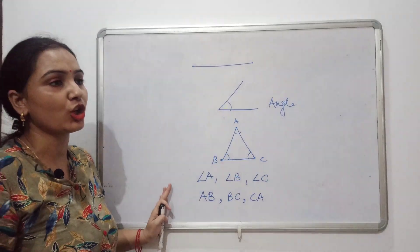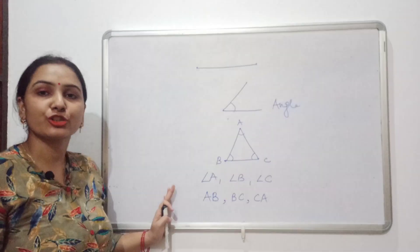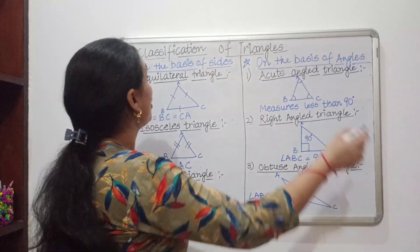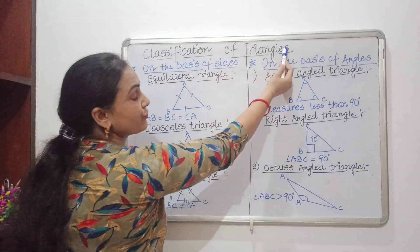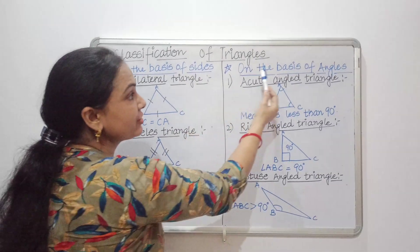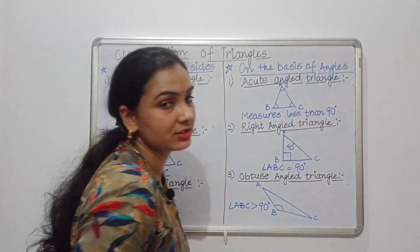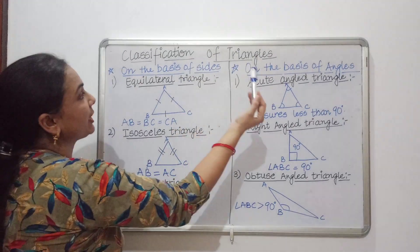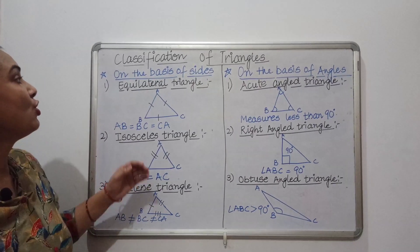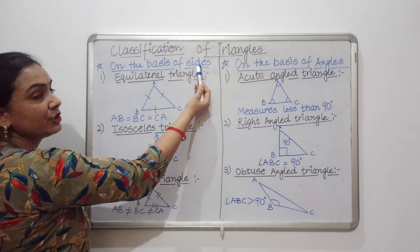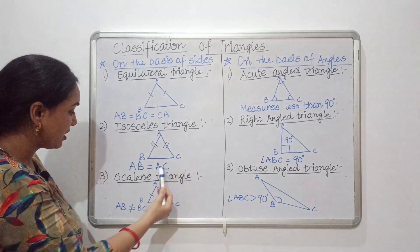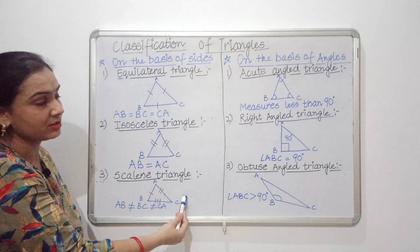So now let's talk about the classification of triangles. Here is the classification of triangles on the basis of sides and on the basis of angles. We have two types. On the basis of sides, we have three triangles: equilateral triangle, isosceles triangle, and scalene triangle.